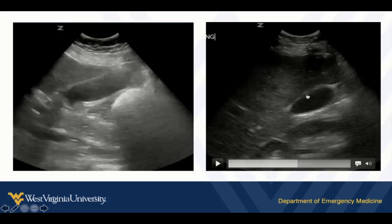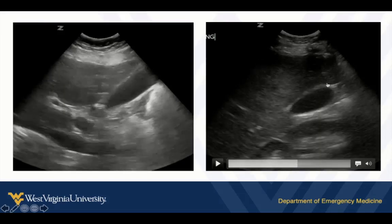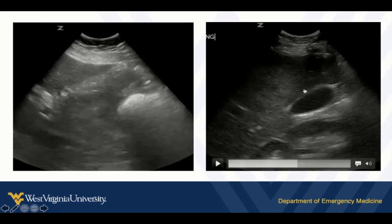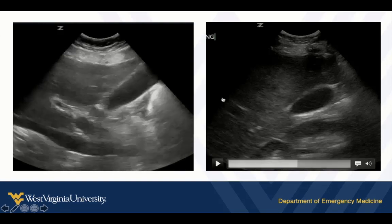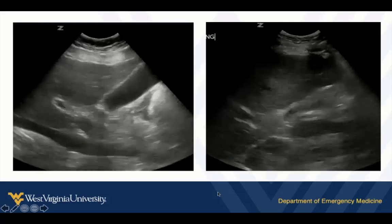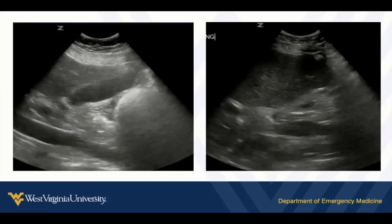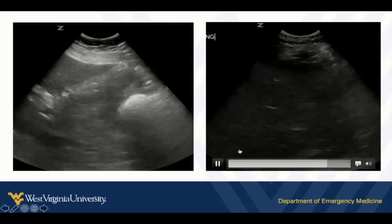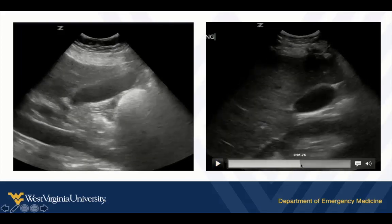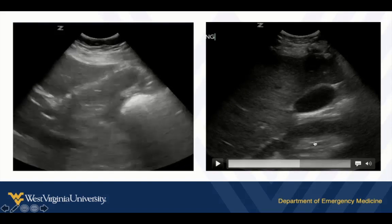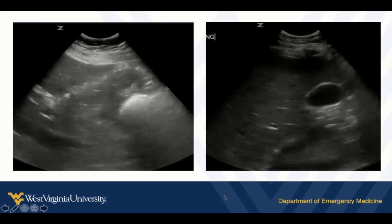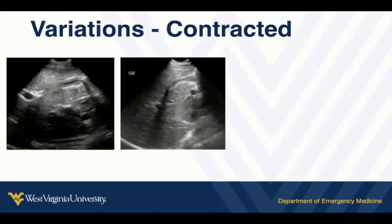Fanning through, we identify the neck and all the way up to the fundus. Notice it has a nice, crisp, well-defined, bright white wall — that's the sign of a non-inflamed gallbladder. There's no fluid around it. The wall is nice and crisp and well-defined. We see our other landmarks to confirm we're identifying the right structure, and depending on the slice, we may also see the right kidney in our view.